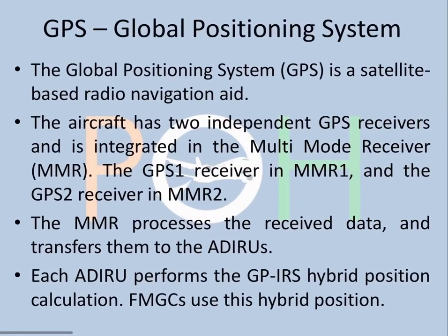GPS — Global Positioning System — is a satellite-based radio navigation aid. The aircraft has two independent GPS receivers, which are integrated into the Multi-Mode Receiver, called the MMR. GPS 1 receiver is MMR 1, and GPS 2 receiver is MMR 2. The MMR processes the received data from GPS and transfers it to the ADIRUs.